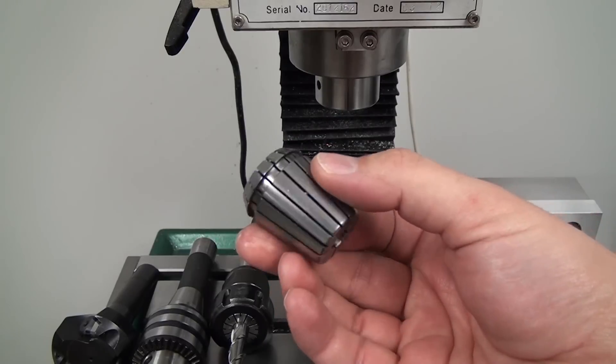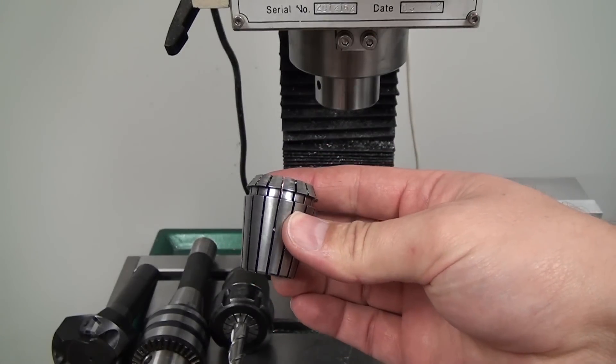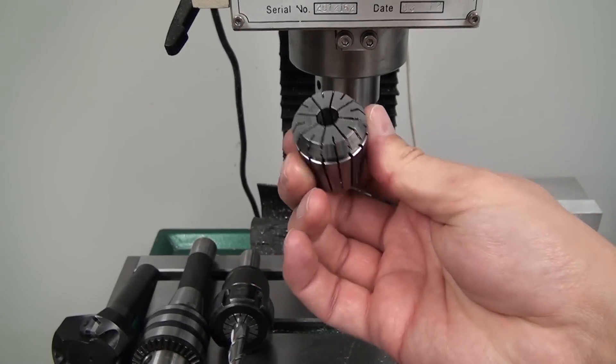Now this right here is just an ER32 collet and of course they come in tons of different sizes and it goes into the collet holder.